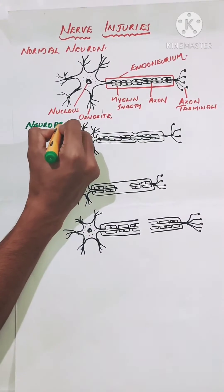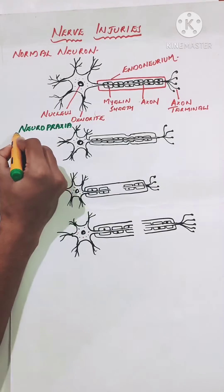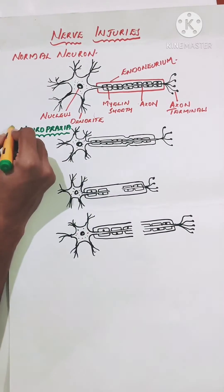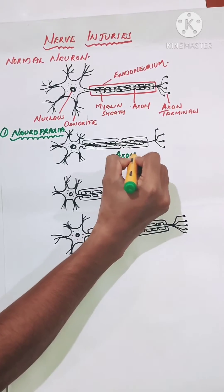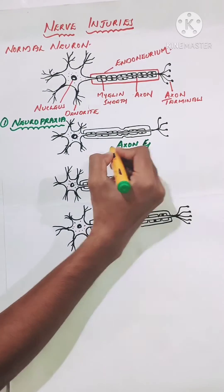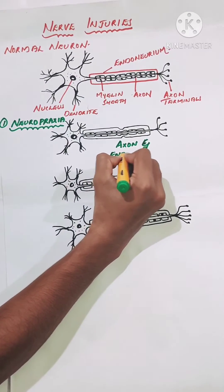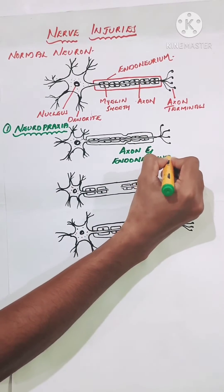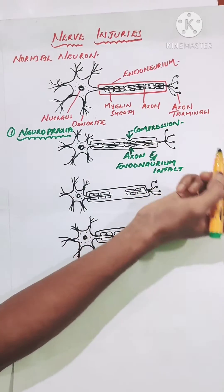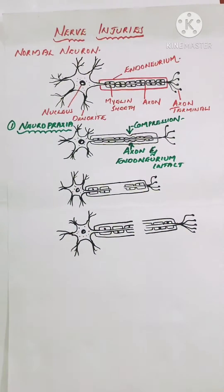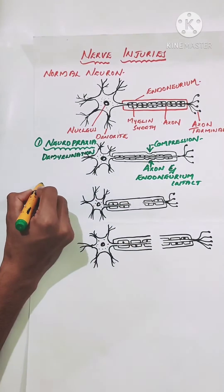Now let's discuss neuropraxia. In these cases, we experience a temporary loss of motor and sensory functions. In this, the axon and the endoneurium remain intact. There will be mild compression of the myelin sheath, and demyelination of the axons is also seen in these cases.